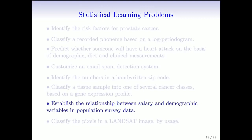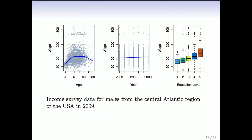The last example before Landsat is: establish the relationship between salary and demographic variables in population survey data. Here's some survey data showing income from the central Atlantic region of the USA in 2009. Income initially goes up with age, then levels off, then finally goes down as people get older. Incomes gradually increase with year as cost of living increases, and incomes change with education level — shown as box plots. The goal is to use regression models to understand the roles of these variables together and see if there are interactions.